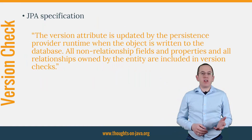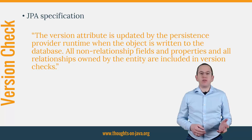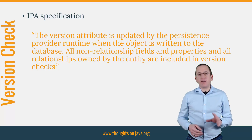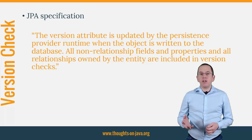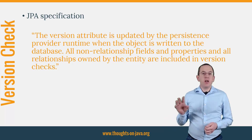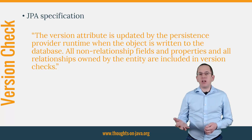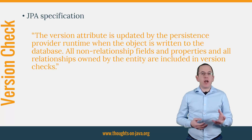The problem is that the version check defined by the JPA specification explicitly excludes relationships that are not owned by the entity. By default, the child or to-many side of the relationship owns the one-to-many association. Hibernate therefore doesn't increment the version number of the parent entity when you add or remove a child entity.